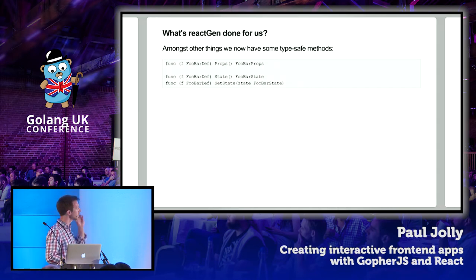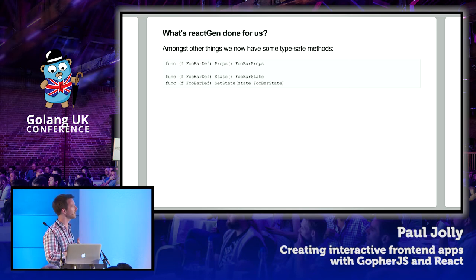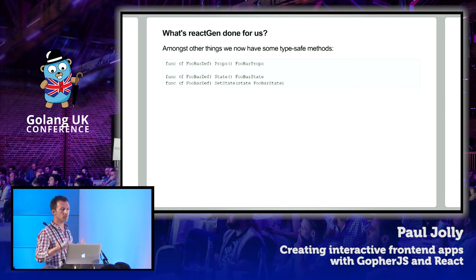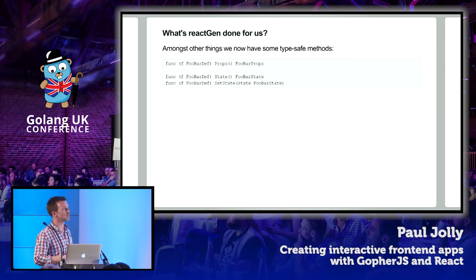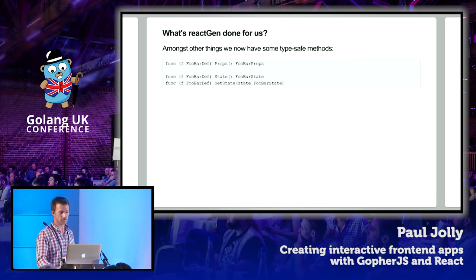Let's just assume we put all of this within one file, saved it, and had Go Generate run. So what's ReactGen done for us? Remembering our component is called foobar, and the component struct type is therefore called foobar def, ReactGen has generated a load of code. The most important three methods it's generated are type-safe methods to get at the props, the state, and change the state from the component's perspective. Within any method we write on the foobar def component, we can get at the props and get back the instance of foobar props, the same with state. And setState is just a way of telling React that the component's state has now changed.